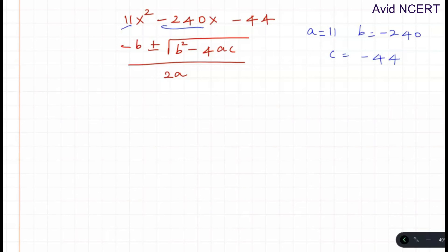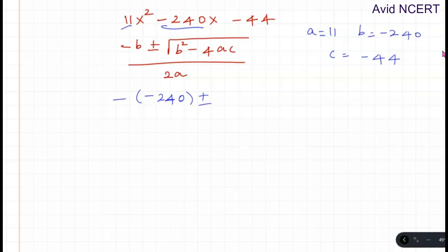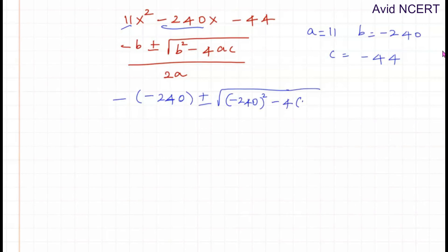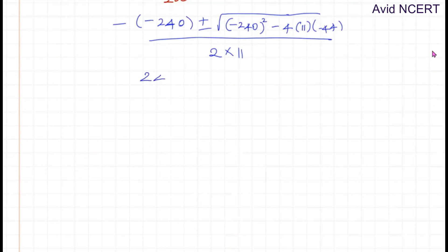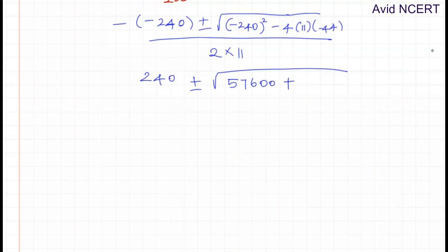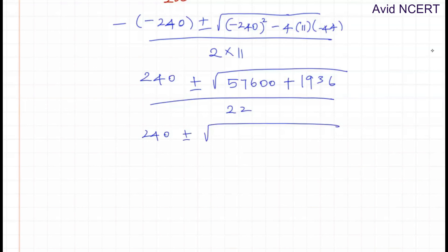Here a equals 11, b equals minus 240, and c equals minus 44. Substituting these values: x equals minus of (minus 240) plus or minus the square root of (minus 240) squared minus 4 times 11 times (minus 44), divided by 2 times 11. This simplifies to 240 plus or minus the square root of 57600 plus 1936, divided by 22.